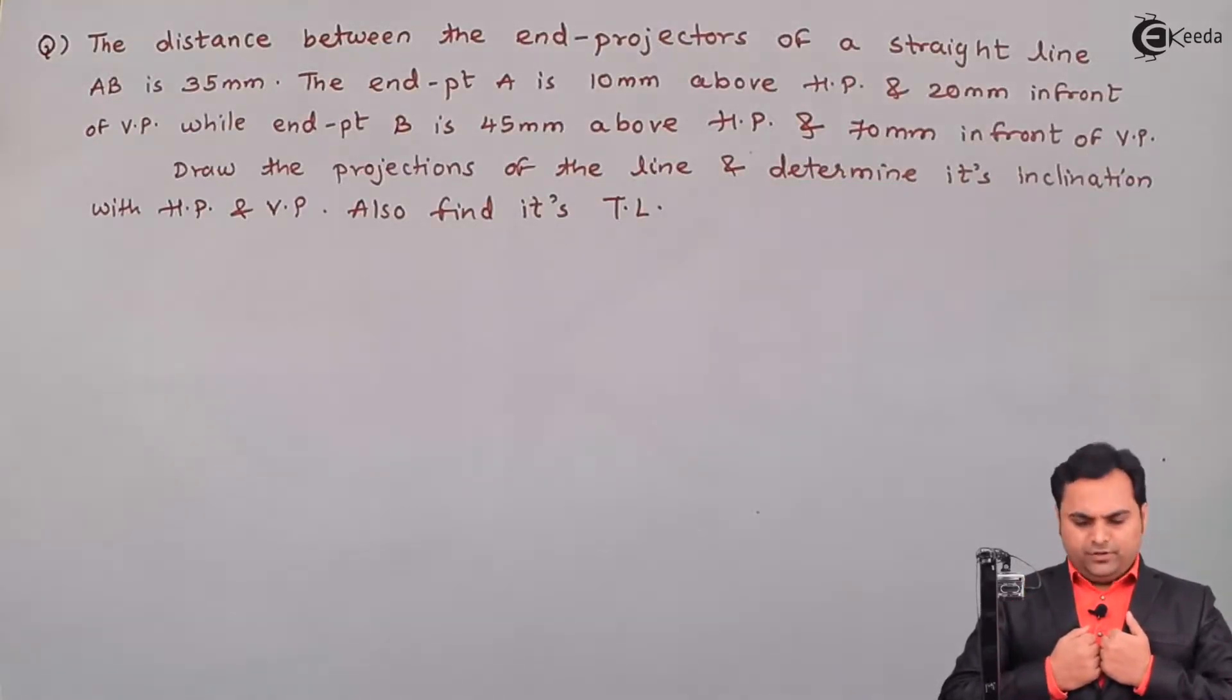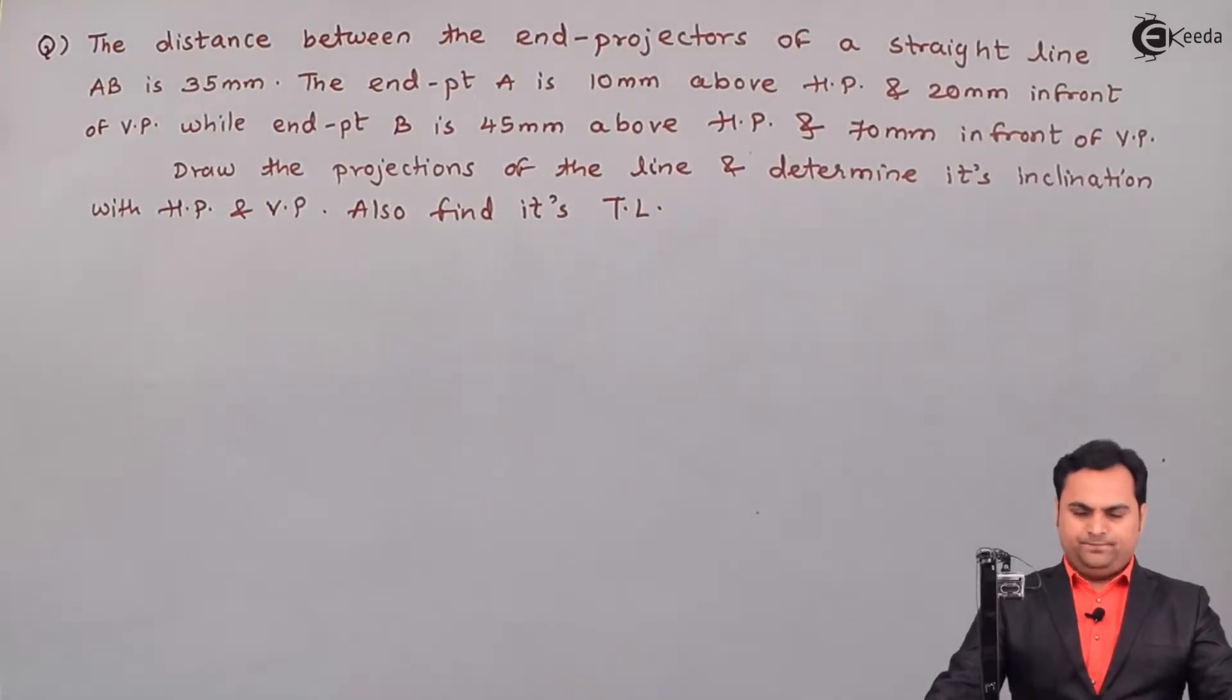Hello friends, here in this video we will see a problem on projection of lines inclined to both the planes. This is the question: the distance between the end projectors of a straight line AB is 35 mm. The endpoint A is 10 mm above HP and 20 mm in front of VP while endpoint B is 45 mm above HP and 70 mm in front of VP. Draw the projections of the line and determine its inclination with HP and VP. Also find its TL, that is true length.